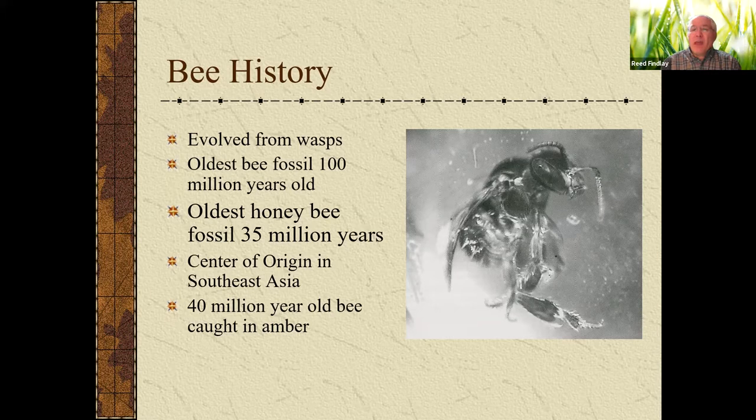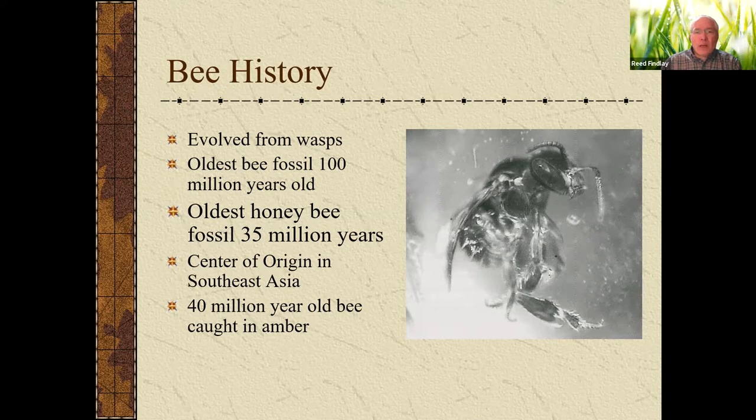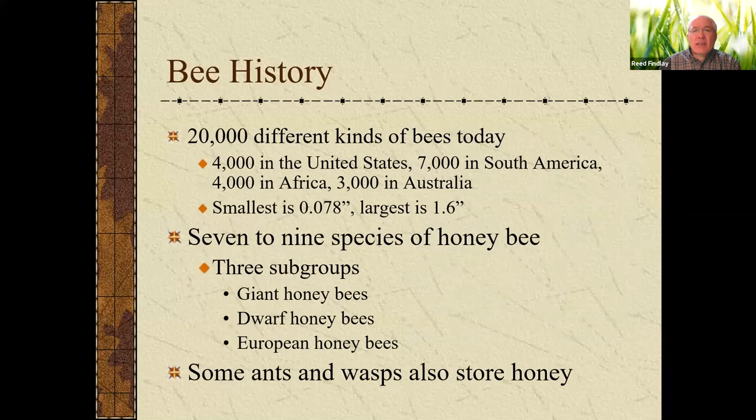If you think about it, that's where alfalfa came from, that's where apples came from. A lot of our crops and a lot of the things we use, including honeybees, came from that area. This is a 40-million-year-old bee caught in amber — that picture right there.